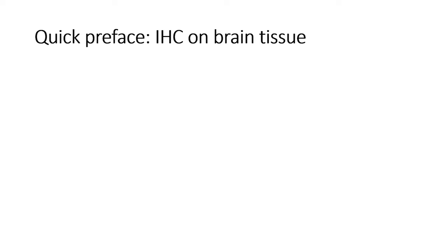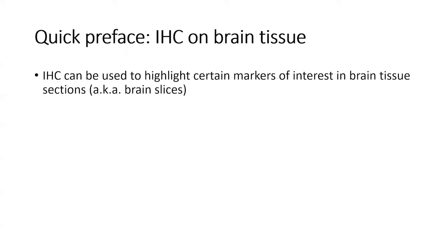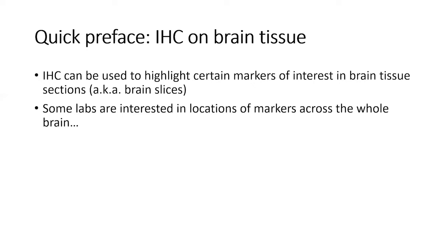A quick preface on what IHC is when we're trying to do it to tissue specimens, particularly brain tissue sections. A lot of people who work in neuroscience use immunohistochemistry to highlight particular markers of interest on brain tissue sections — what people call tissue slices. Those markers might have something to do with dopamine receptors in the brain, or other proteins that we want to tag to see where in the brain they are.